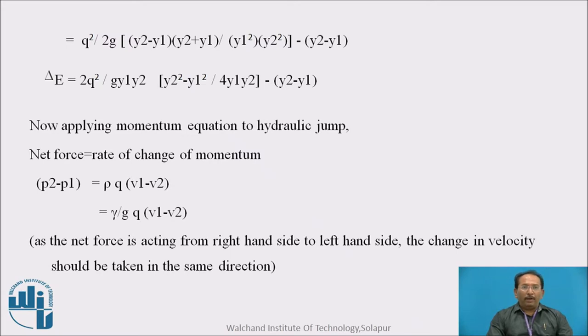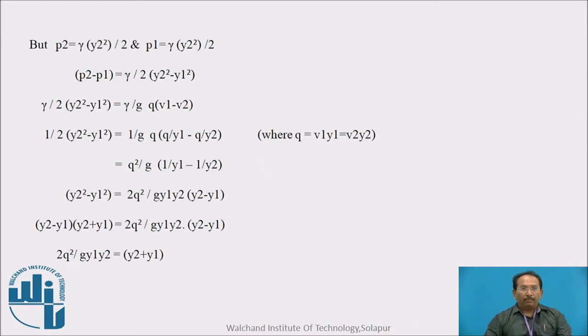Now, applying momentum equation to the hydraulic jump, that is the net force is equal to rate of change of momentum. That is p2 minus p1, that is a net force, is equal to rate of change of momentum, that is rho, that is density, mass density into q into bracket change in the velocity. As the net force is acting from right hand side to left hand side, as we are saying in the figure, the change in the velocity should be taken in the same direction, v1 and v2. Put these values here and simplify it.